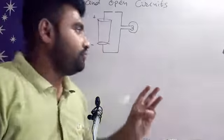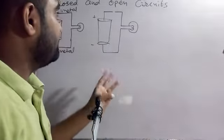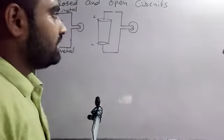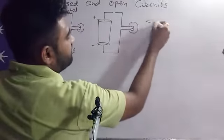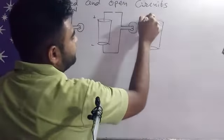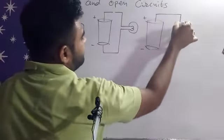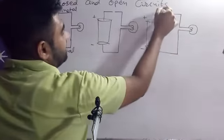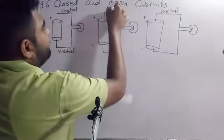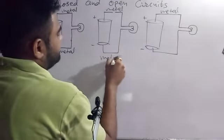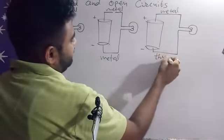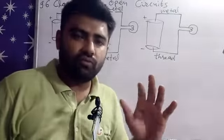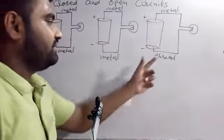So the first condition for current to flow is that the circuit has to be complete. Now I am drawing a third diagram. Again a pencil cell, positive terminal, negative terminal, metal wire, and an electric bulb. The circuit is completed, but here instead of metal wire we have only one thread. Thread is a type of cloth material.